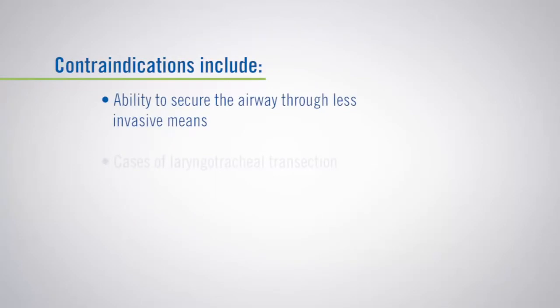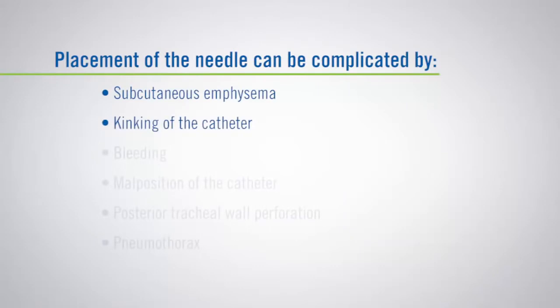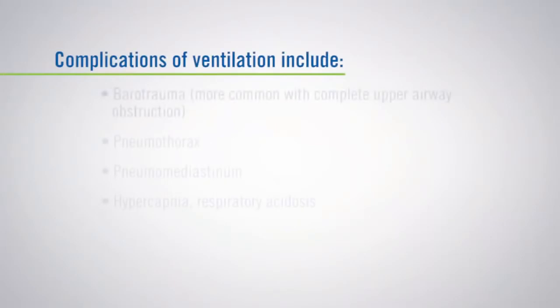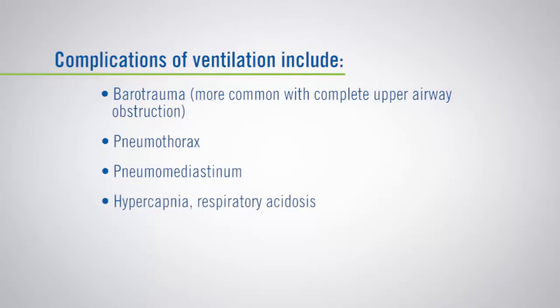Contraindications include the ability to secure the airway through less invasive means, or cases of laryngotracheal transection. Placement of the needle can be complicated by subcutaneous emphysema, kinking of the catheter, bleeding, malposition of the catheter, posterior tracheal wall perforation, and pneumothorax. Also, complications of ventilation include barotrauma, which is also more common with complete upper airway obstruction, pneumothorax, pneumomediastinum, and hypercapnia with respiratory acidosis.